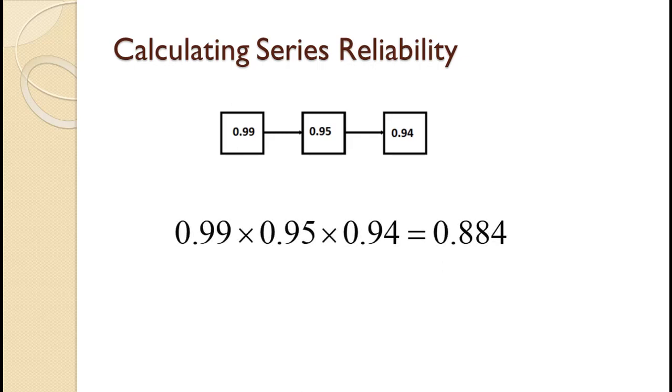Here, 0.99 times 0.95 times 0.94 equals 0.884. Series reliability will always be lower than the lowest component reliability.